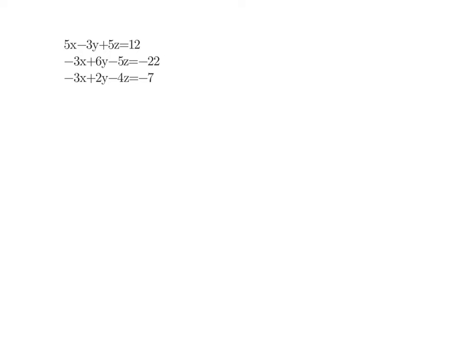Looking at this particular system, if I wanted to eliminate my X's I could do so by multiplying these two equations to get 15, or multiplying these two equations by negative 1. I could also eliminate my Y's where this negative 3 could be multiplied by 2 to eliminate the 6, and this equation multiplied by negative 3 to eliminate with the 6. I could also do my Z's by multiplying one equation by 4 and one by 5. In this example, I'm going to choose to eliminate my Y's first.